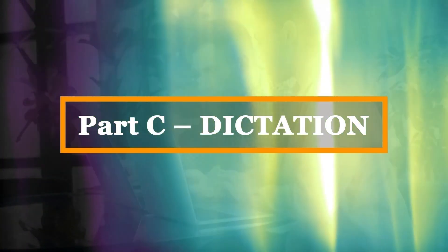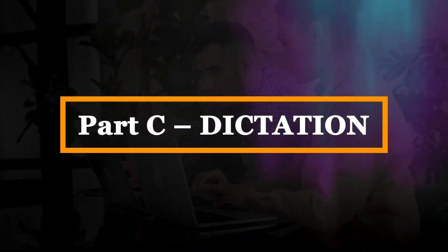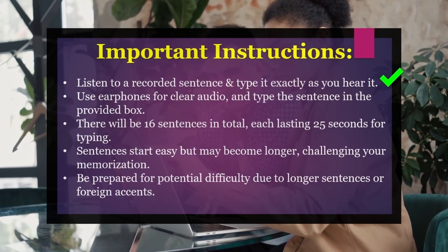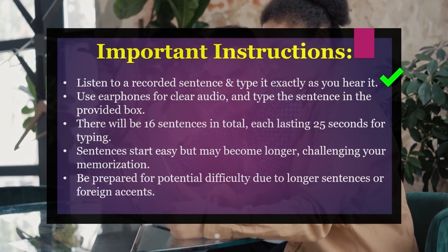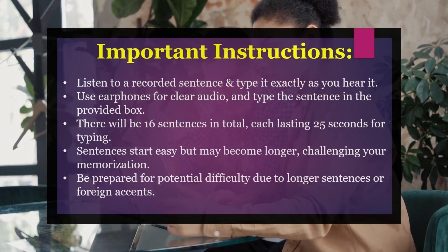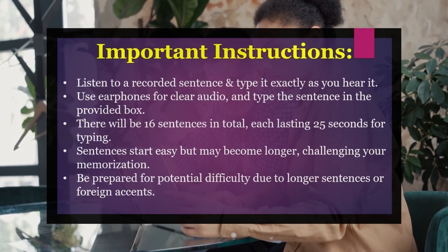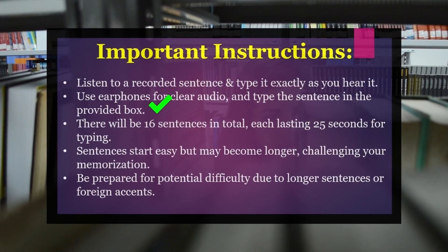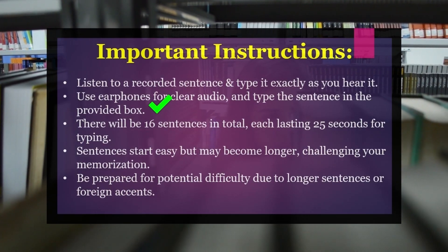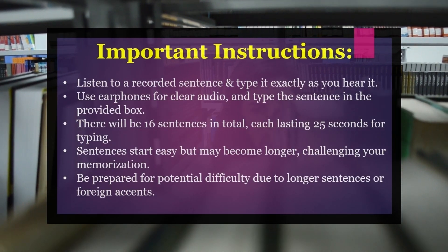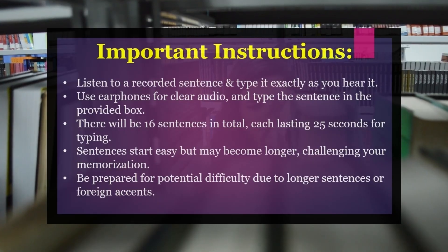Now let's move on to section three, dictation. In this section, an automated voice will speak a sentence to you and you must type it exactly as you hear it. Basically, this is a listening and typing round. You need to plug in your earphones and you will hear a recorded sentence, after which you will have to type the same sentence in the box provided on the screen.